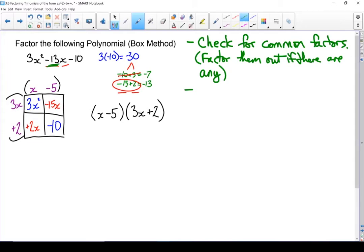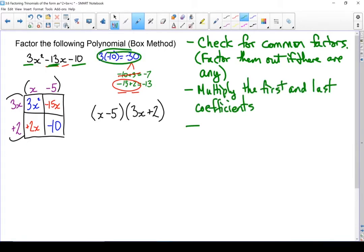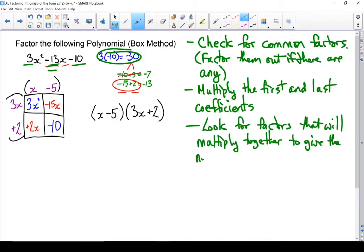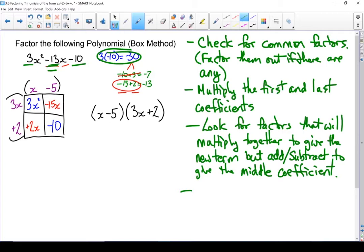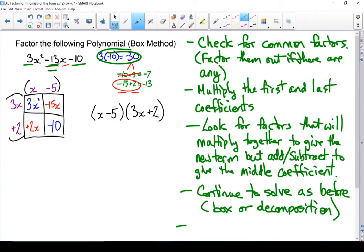Let's write out the steps that we took to get here. My first step is you check for any common factors in all three terms of your polynomial, and if there are any, you factor them out. There weren't any in this one. Next step: multiply the first and last coefficients. So we multiplied that 3 and that minus 10. We're going to use that new number, in this case a minus 30, to look for factors that multiply to give that and add together to give your middle term. And last, continue solving either using the box method or decomposition. And last, if you pulled out any common factors, then those are going to be factors in your answer. I'll show you how that works in the next example.